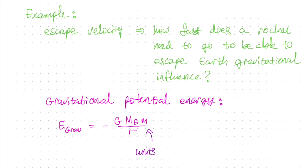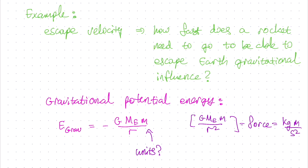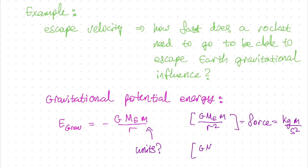Instead of proving that the formula is correct, let's at least check that the units are correct. Big G times the mass of the Earth, mass of the spacecraft, divided by r squared — that's the universal force of gravity, so it has the units of force, or newtons. Newtons are kilograms meters per second squared, or mass times acceleration. Now for our formula, big G times the mass of the Earth times the mass of the spacecraft divided by r — we take the units of force and multiply by meters, so we get kilograms times meters squared per second squared. And those are indeed units of energy — checkmark.